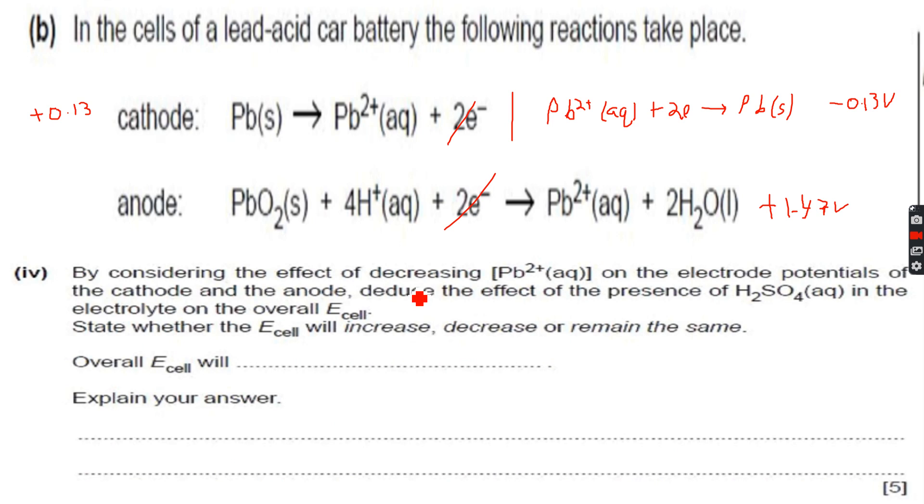By considering the effect of decreasing the concentration of Pb2 plus ions on the electrode potentials of the cathode and the anode, deduce the effect of the presence of H2SO4 aqueous in the electrolyte on the overall E cell. Now, let's see, Pb2 plus is decreasing, right?